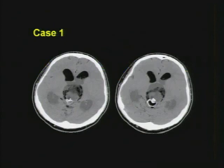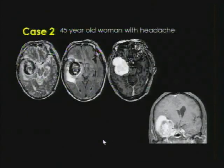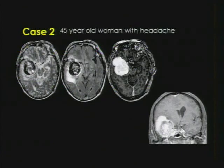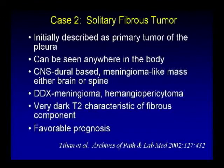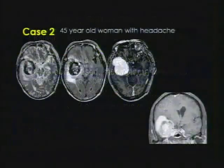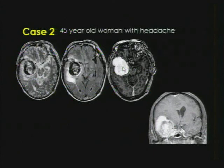Whenever you see an extra-axial mass and are about to diagnose meningioma, note if the mass is almost black on T2. When you see a black lesion on T2, think fibrous lesion — this is a solitary fibrous tumor, a well-characterized WHO entity. So when you see a dark T2 lesion that all in the world looks like meningioma, think solitary fibrous tumor.